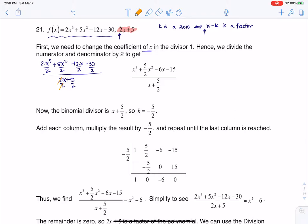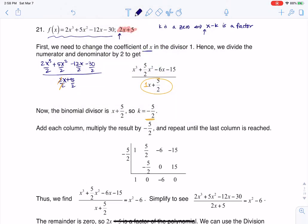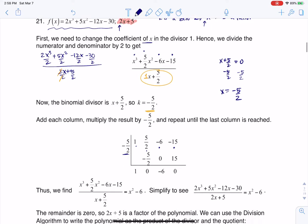Now that I have that divisor where that lead coefficient is 1, I can see that my k value is negative 5 halves. If you can't see your k value is negative 5 halves, just take x plus 5 halves and set it equal to 0, because we're talking about zeros here, and I would subtract 5 halves from both sides. That's where I'm getting my k value of negative 5 halves. So I put that here, and then you can see my lead coefficients of 1, positive 5 halves, negative 6, and negative 15.